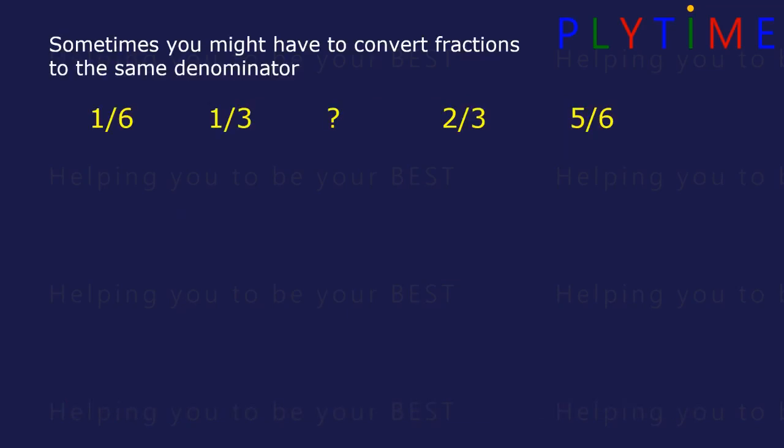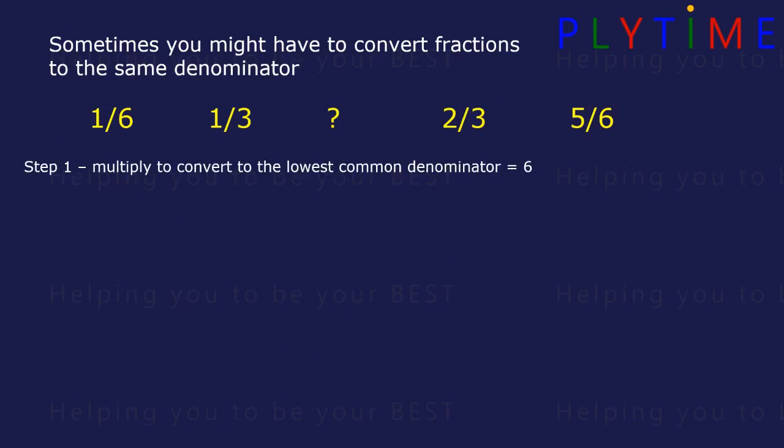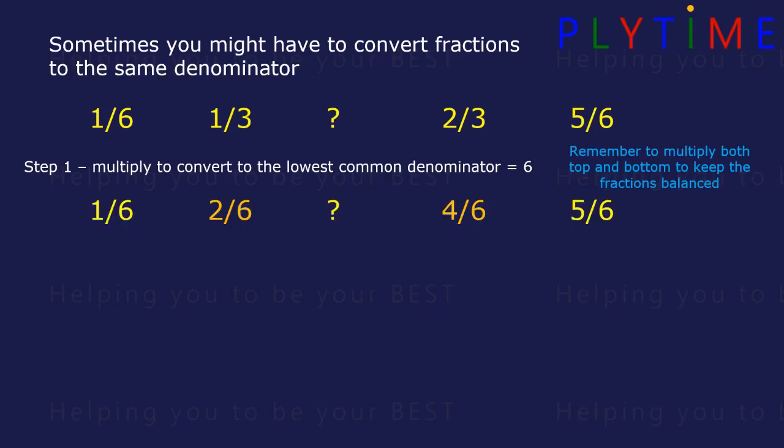Sometimes you might have to convert fractions to the same denominator. We multiply to convert to the lowest common denominator — 6 here. We must remember to multiply the top and the bottom by the same number to keep the fractions balanced. 1 third is the same as 2 sixths, and 2 thirds is the same as 4 sixths.